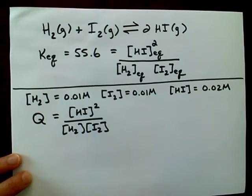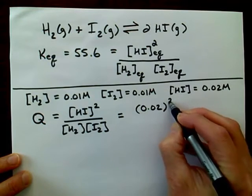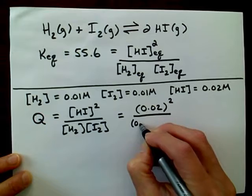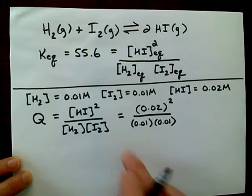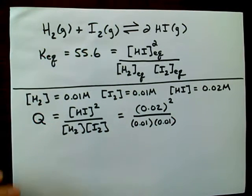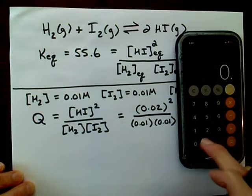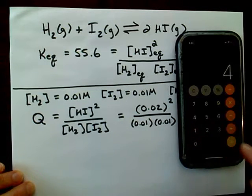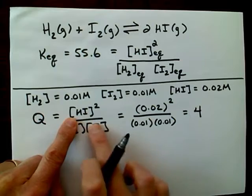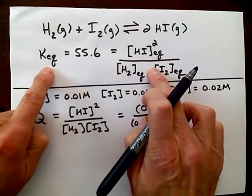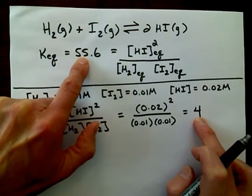Let's plug these values in and see what happens. HI is 0.02, so we square that, and divide by 0.01 for the hydrogen concentration and 0.01 for the iodine concentration. Running the numbers: 0.02 times 0.02 in the numerator, divided by 0.01 divided by 0.01 in the denominator, and we get Q equal to 4. Because we didn't get 55.6, we know we're not at equilibrium.